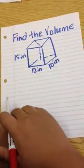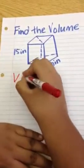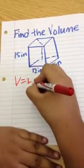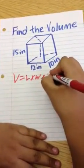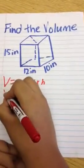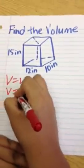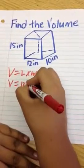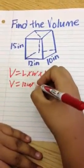The formula is V equals length times width times height. Then you substitute the length, width, and height.